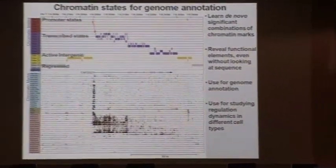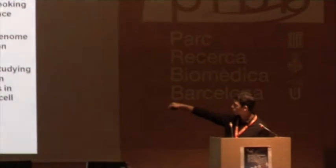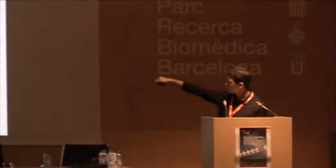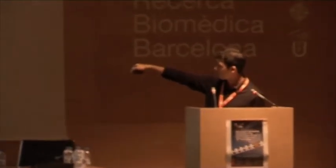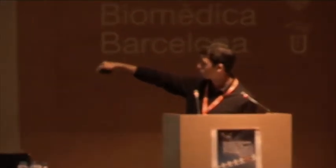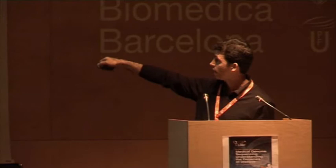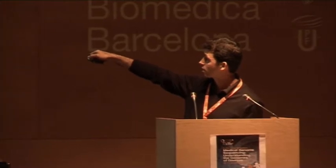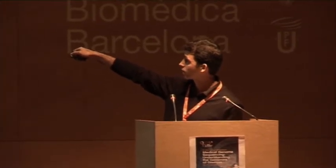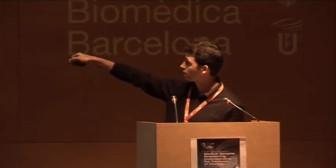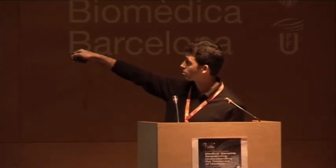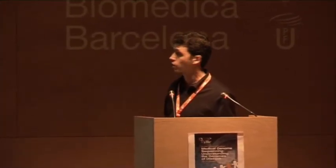And what's interesting is that even with a naked eye, a human observer has a hard time figuring out what's different between these regions and those regions. And yet, the tool that we have built is able to actually distinguish them as different chromatin states.